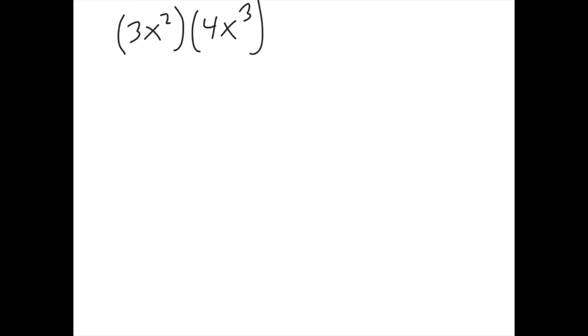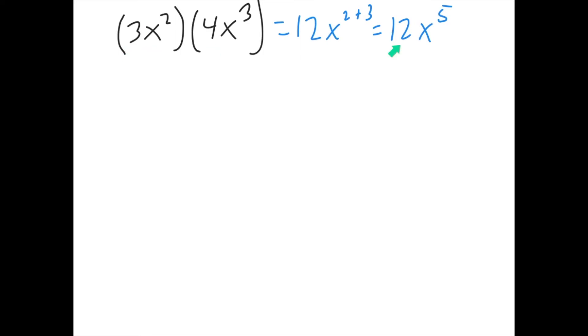Now let's look at some examples. Here we have 3x squared times 4x cubed. When you have the numbers in front — these are known as coefficients — you multiply those first. So 3 times 4 gives us 12. Then we look at the exponents: x squared times x to the 3rd. Remember, that's when you add the exponents. So 2 plus 3 gives us x to the 5th. So 3x squared times 4x cubed gives us 12x to the 5th.